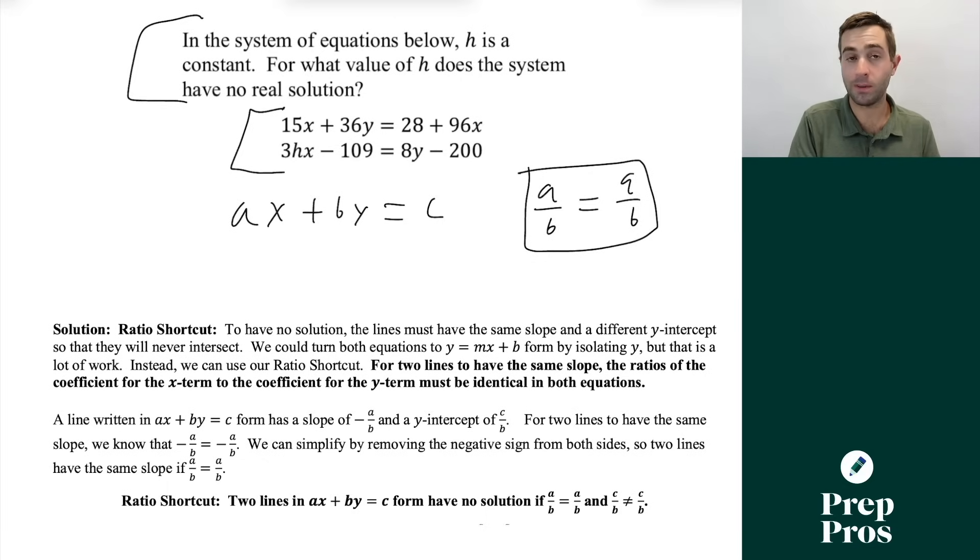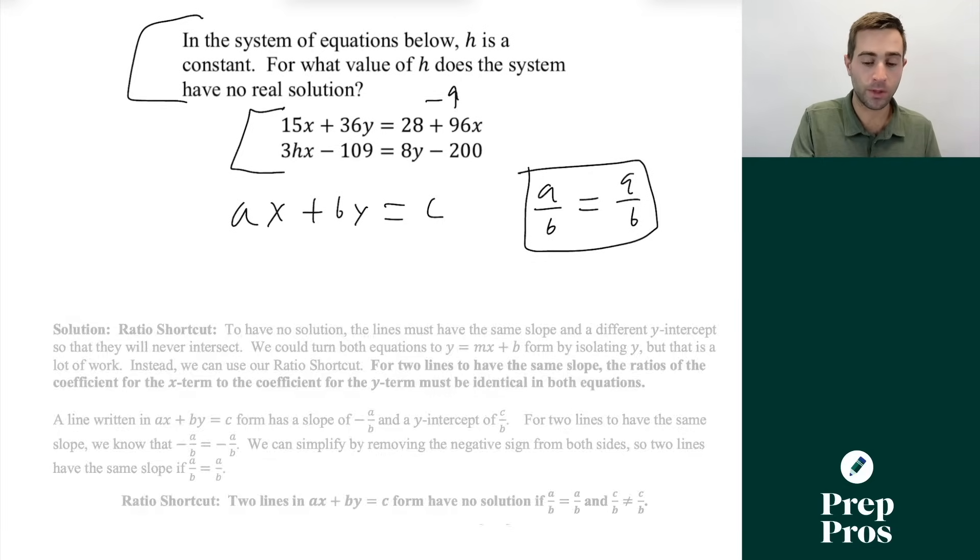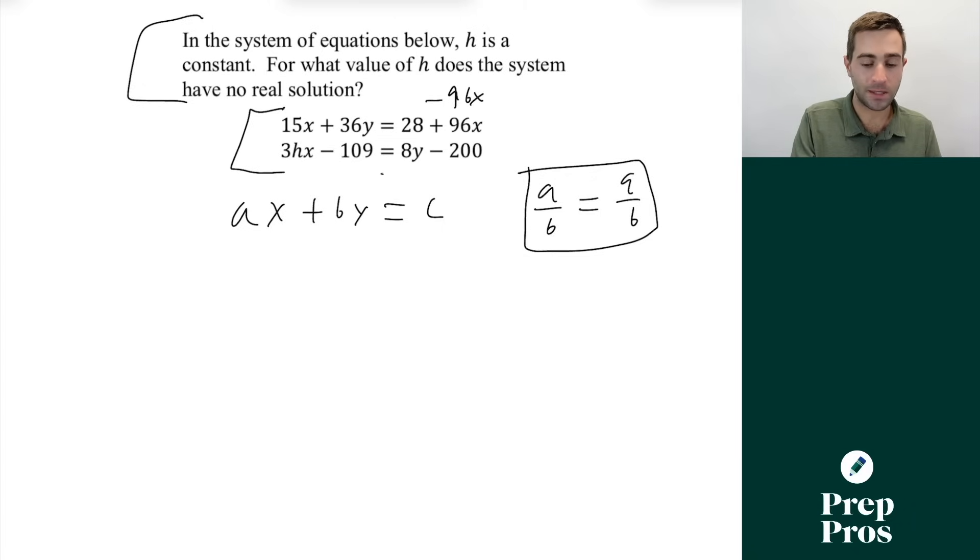So here we just want to get both of these in ax plus by equals c form. So that means in my first equation, I'm going to subtract over the 96x. In my second equation, I'm going to subtract over the 8y and add over the 109. Now as we do that, that's going to give us negative 81x plus 36y equals 28.